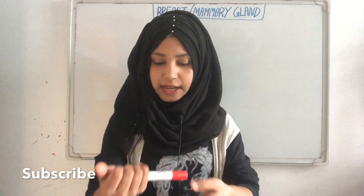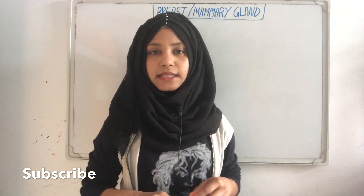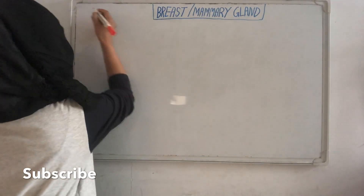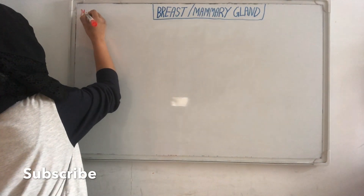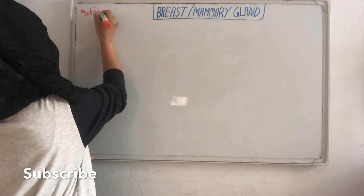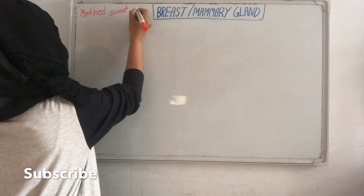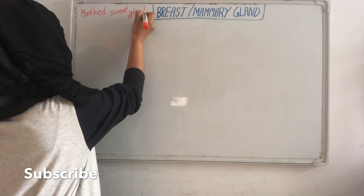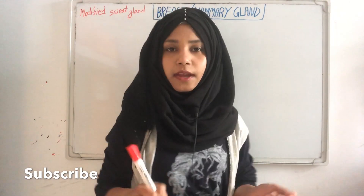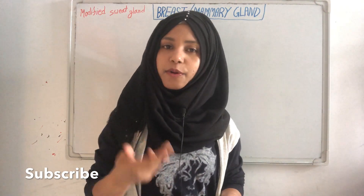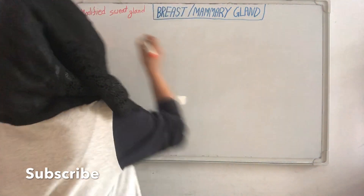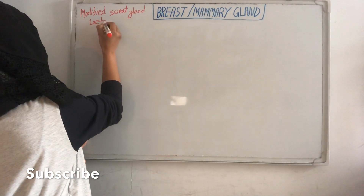The mammary gland is a modified sweat gland. The primary function of the mammary gland is to produce milk in order to nourish an infant or newborn baby, and this process is called lactation.